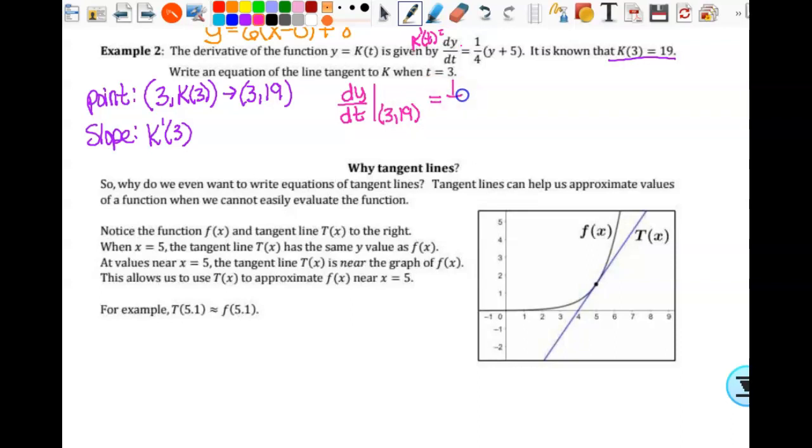So this gives me 1/4 times 19 plus 5. So that's 24, and a fourth of that is 6. So then the equation of my line, y equals 6 times (x - 3) + 19. But don't go do weird things if they give you the derivative, right? Make sure you read what it is, and sometimes we're substituting in y. That's why we need to have that other little notation there.